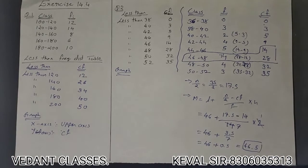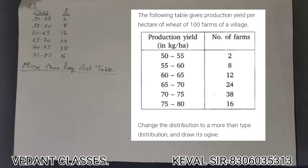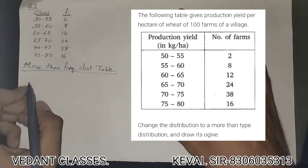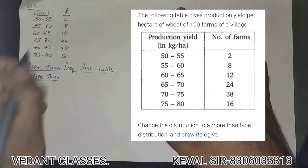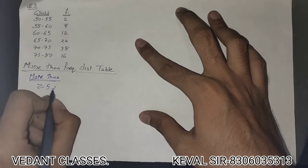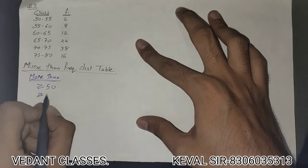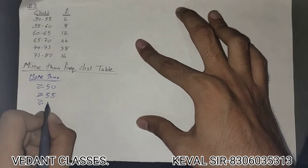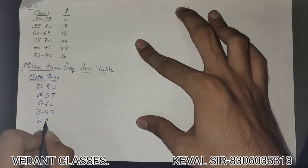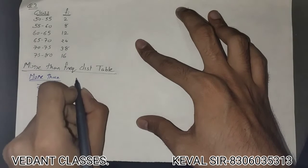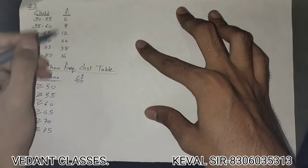Now question number three: we need to make the more-than frequency distribution table. For the more-than type, we consider the lower limit with a 'greater than or equal to' sign. The classes are: more than or equal to 50, 55, 60, 65, 70, and 75.